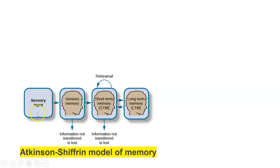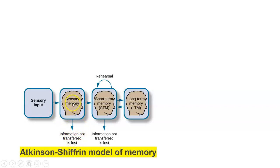We understand this process using the Atkinson-Schiffrin model of memory. There are three different levels of memory in the human brain: sensory memory, short-term memory, and long-term memory. When sensory input is received, it is given to the sensory memory. When the information is not processed there, it is not transferred and is lost. The remaining information then moves to the short-term memory.